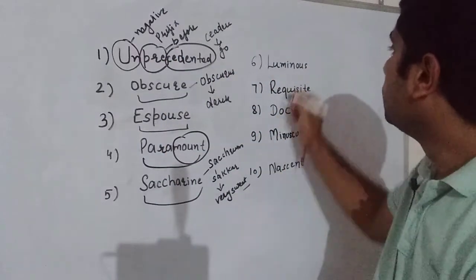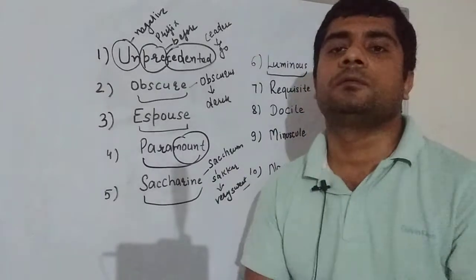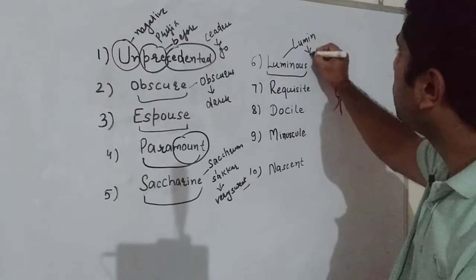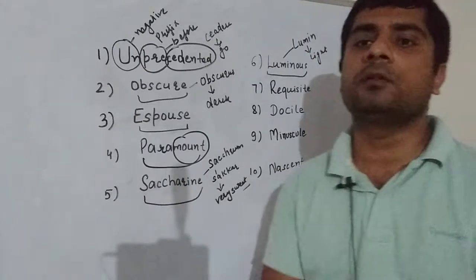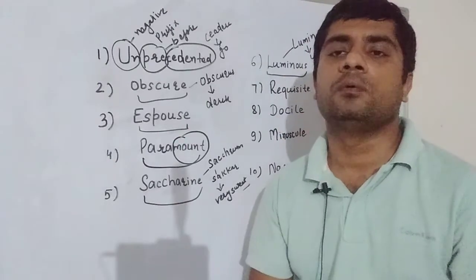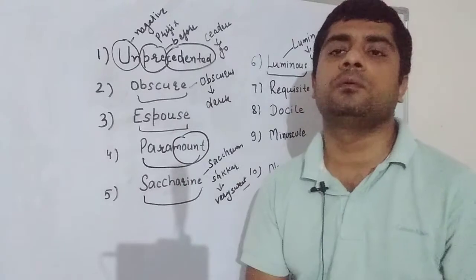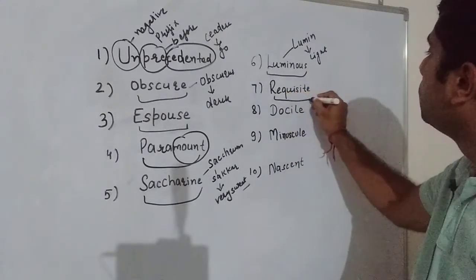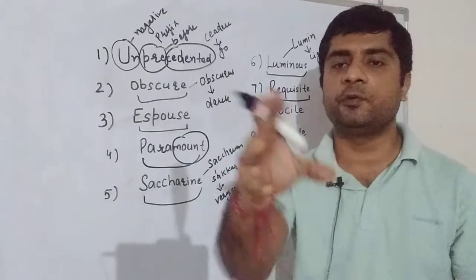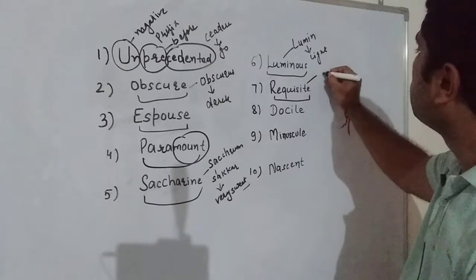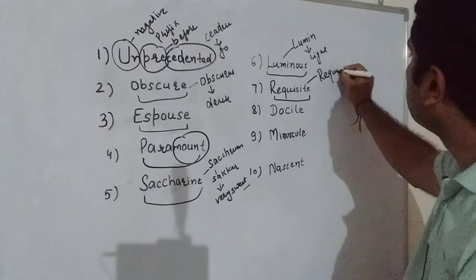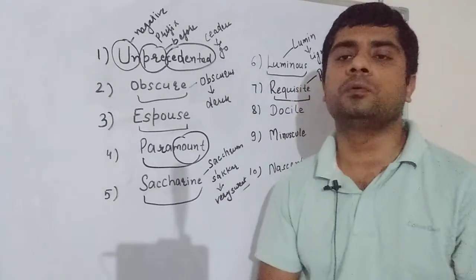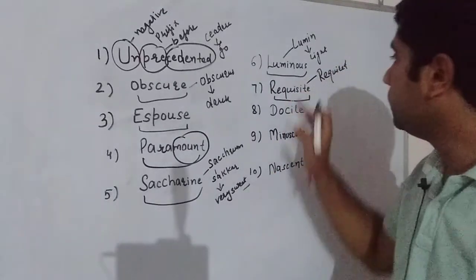Next word hai luminous. Luminous aya hai Latin lumen se. Lumen ka matlab hai light. To luminous ka matlab hai full of light, jisko do bright ho, chamakdaar ho, full of light or shining. Next word hai requisite. Requisite ka matlab hai required, jo required hai, jo in demand hai, jo zaruri hai, requisite.